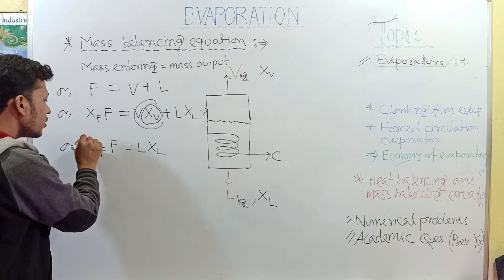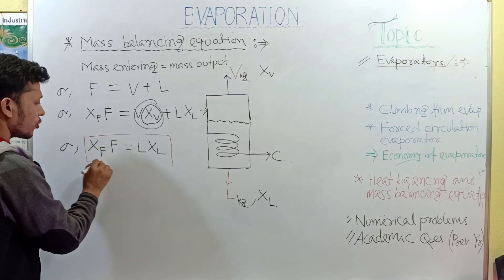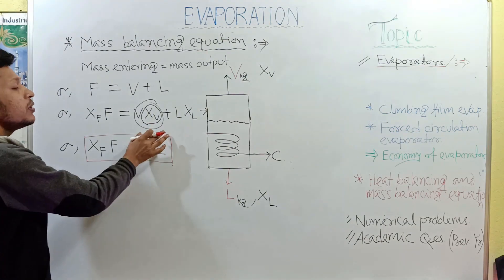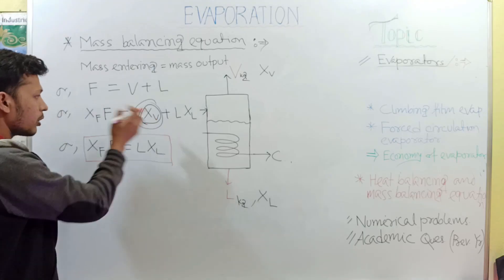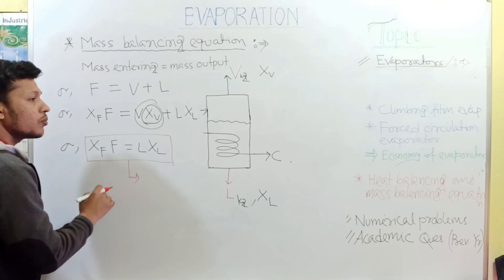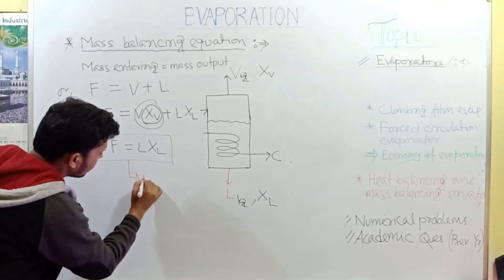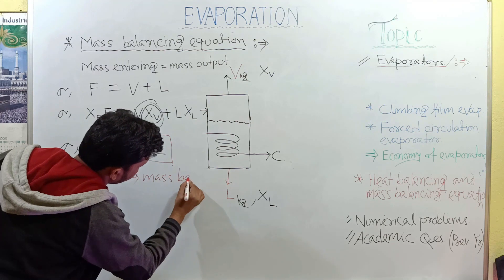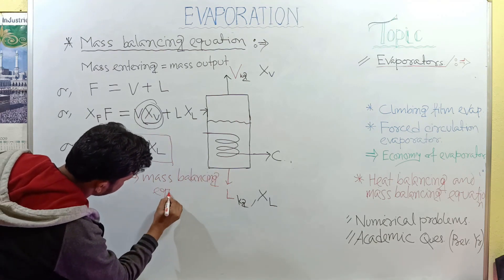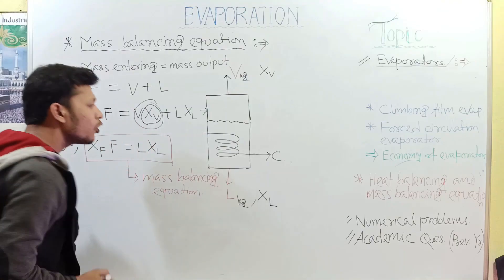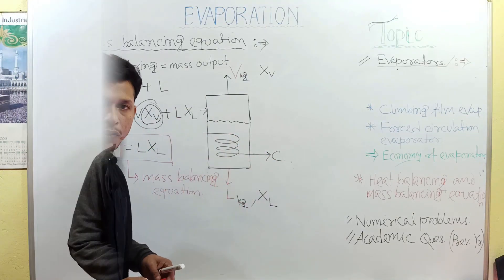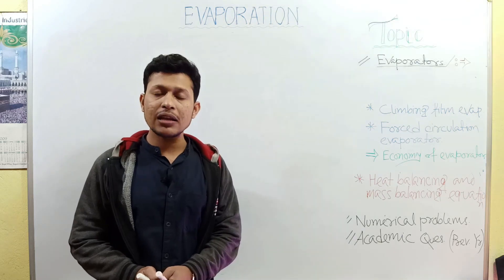This gives the final mass balancing equation in terms of solid content: F·xf = L·xl. When writing in an exam paper, you must mention every step and explain why xv is omitted before arriving at this final equation. This is the final mass balancing equation.